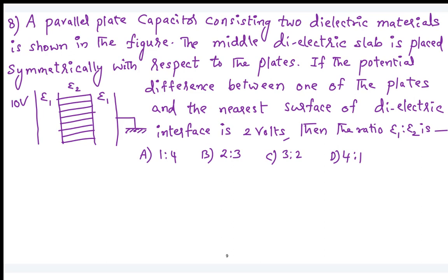This is your 10-volt plate. The potential difference between this plate and the nearest dielectric surface is 2 volts, so this surface is at 8 volts. Similarly the other plate is 0 volts, and by symmetry the corresponding dielectric surface is at 2 volts. So there is a 2-volt drop in medium 1 and a 6-volt drop in medium 2.